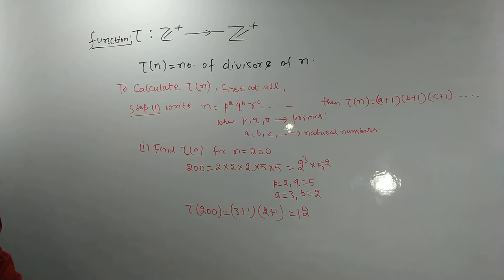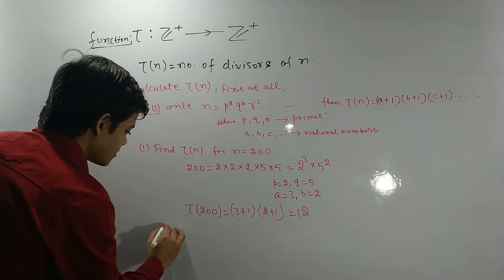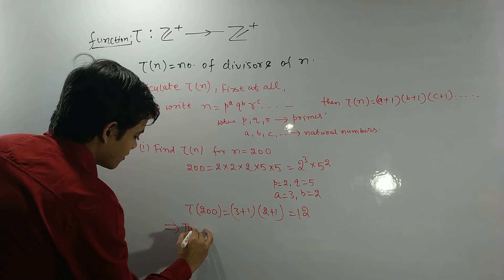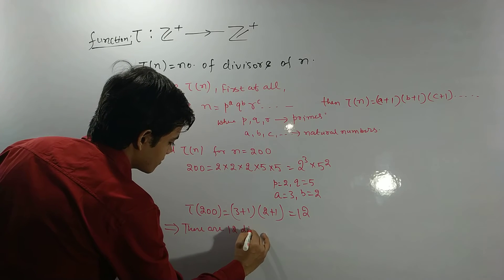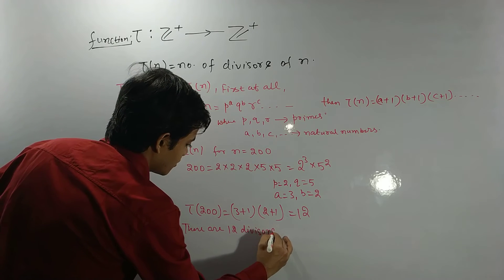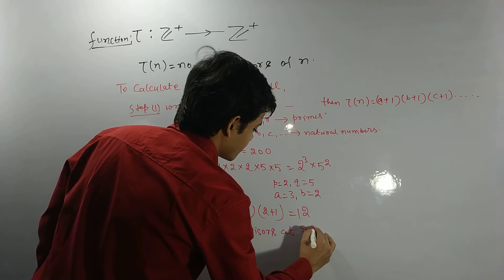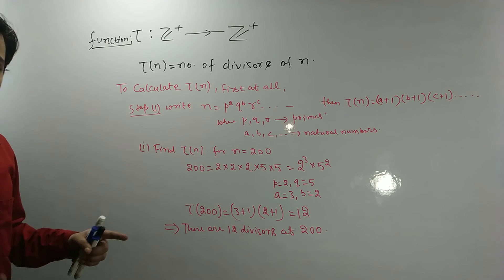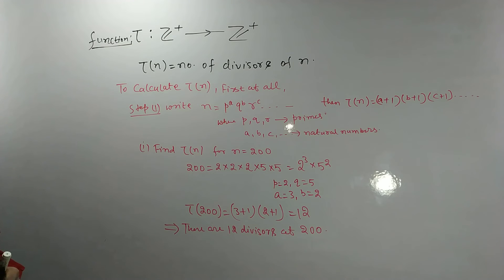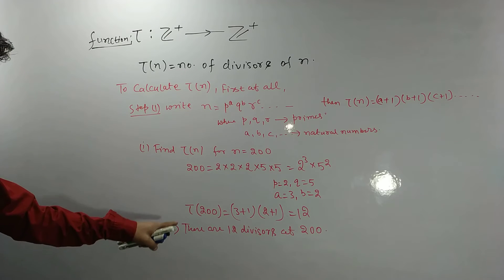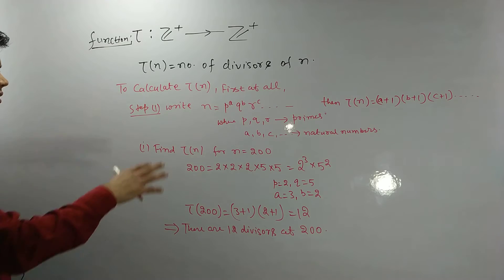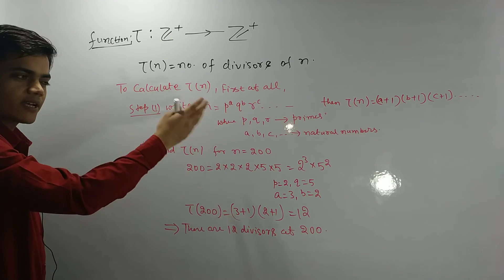So Tau of 200 is 12. What does this mean? This means there are 12 divisors of 200. Okay, Tau(n) gives the number of divisors.